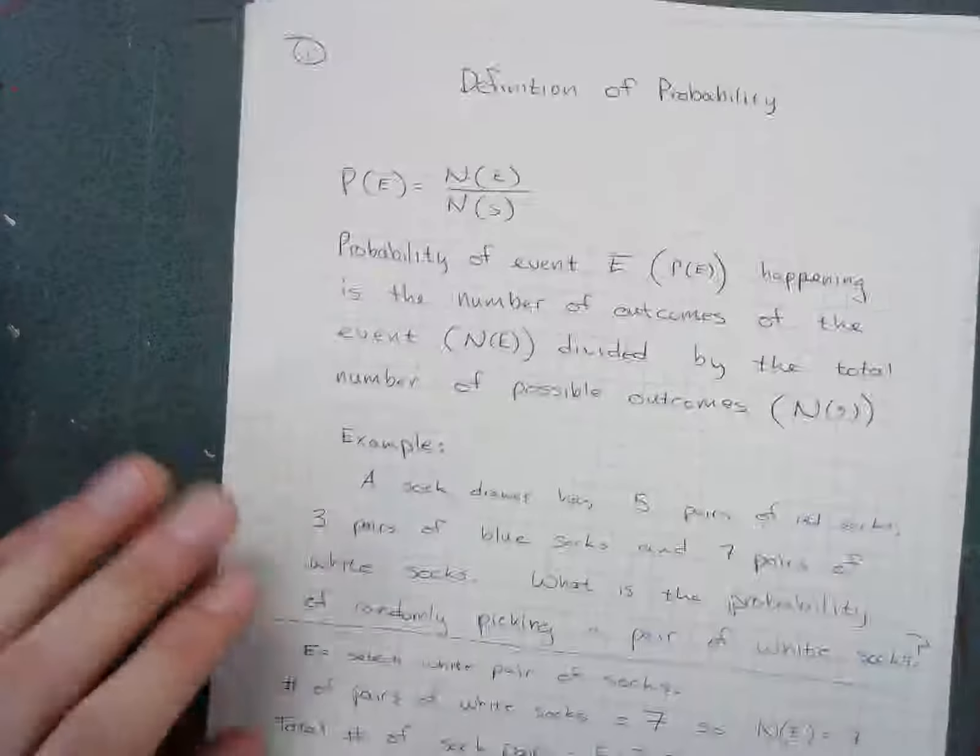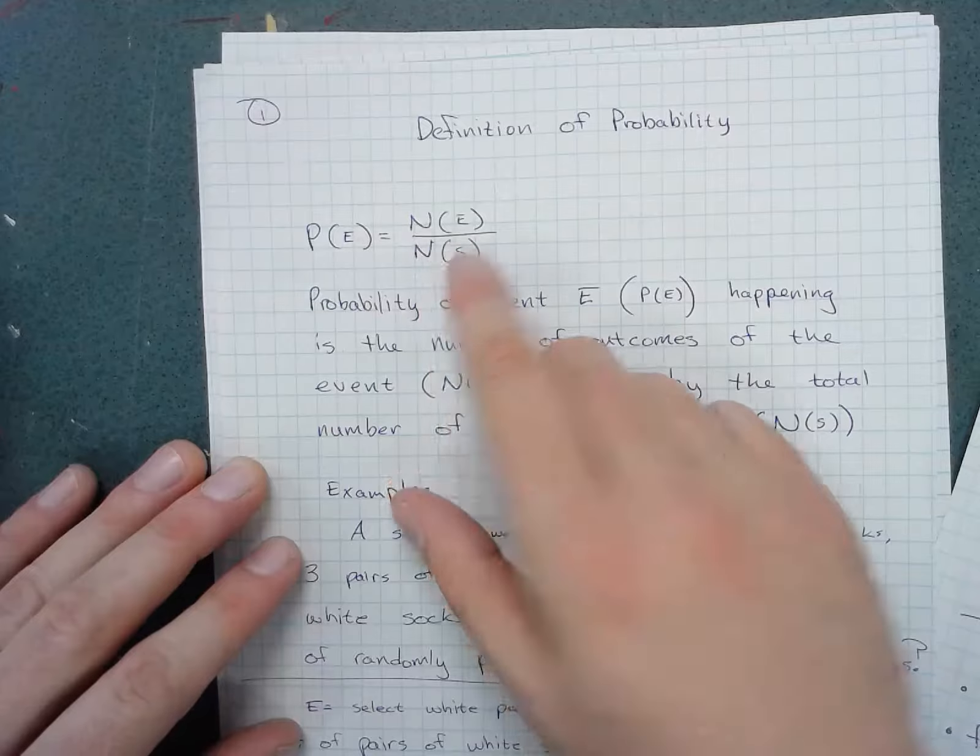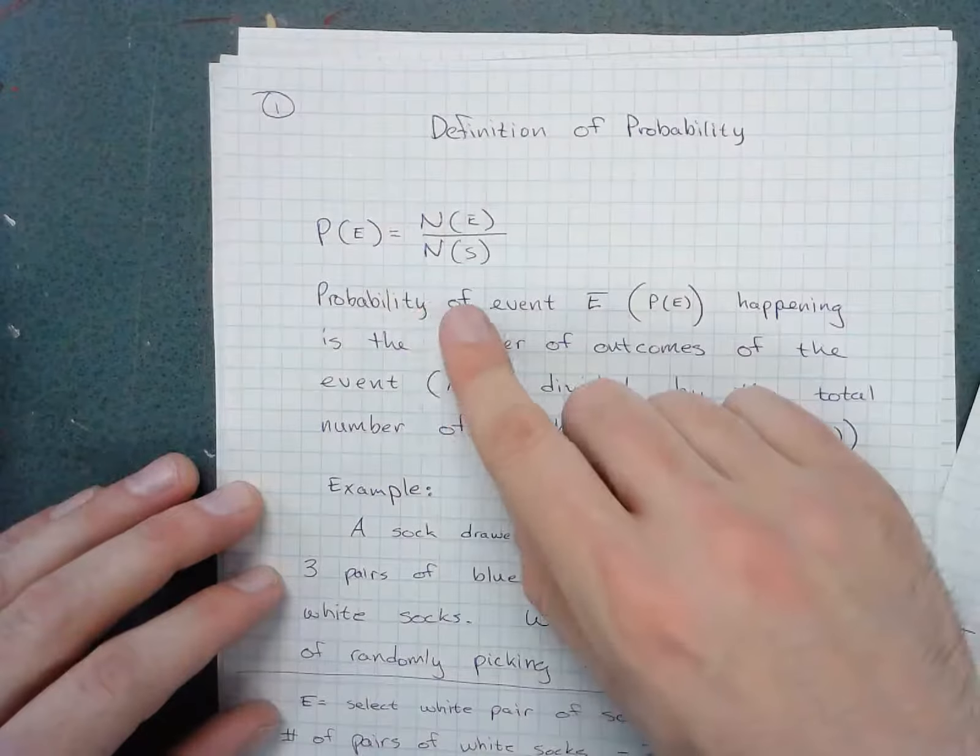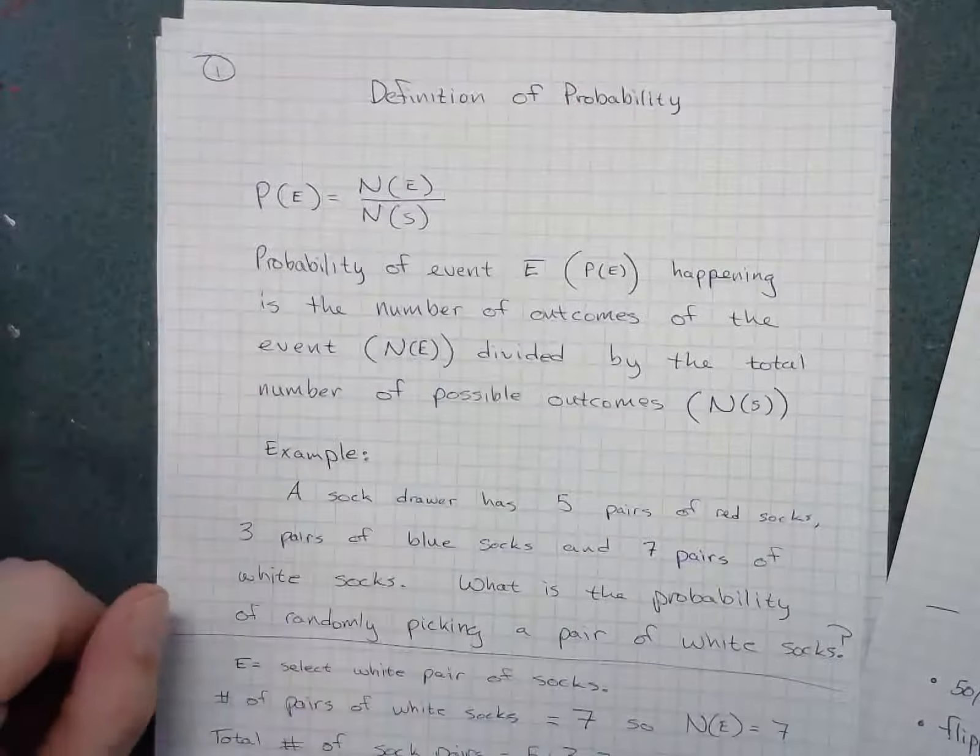Basic probability, once again, is the number of events that you're interested in divided by the total number of possible outcomes. I'll see you next time. Thank you.